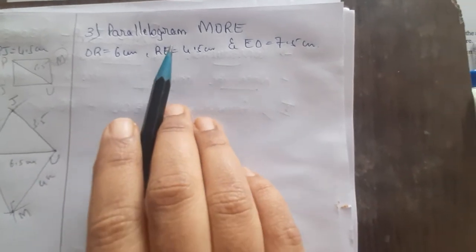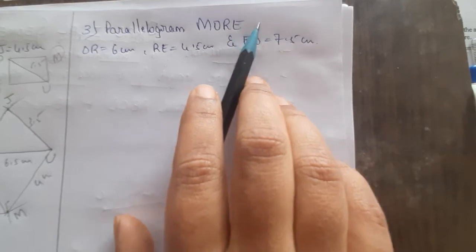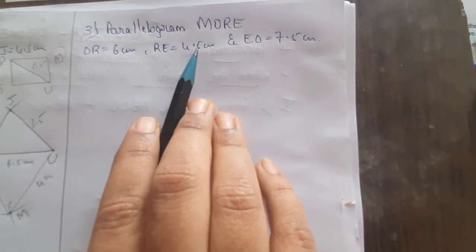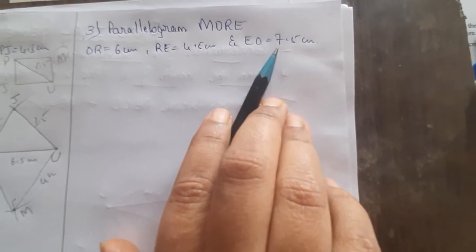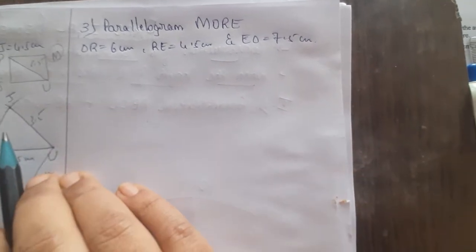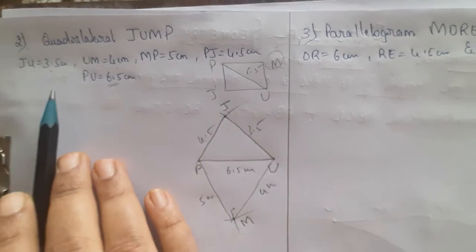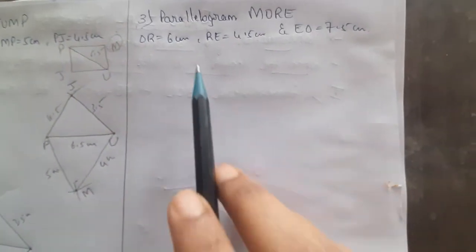Next question children - they are asking us to construct a parallelogram M-O-R-E, given O-R is 6 cm, R-E is 4.5 cm, and E-O is 7.5 cm. But here, they have to give 4 sides of the parallelogram and 1 diagonal. Only 3 measurements are given. How can we construct a quadrilateral or a parallelogram?